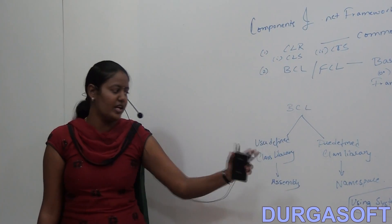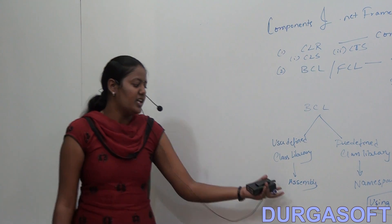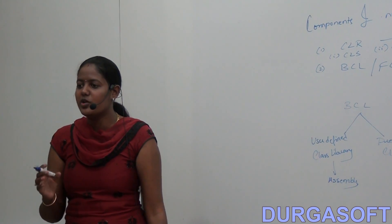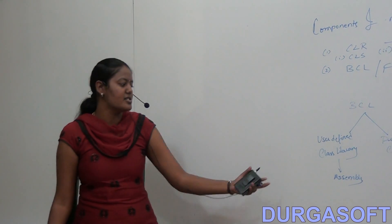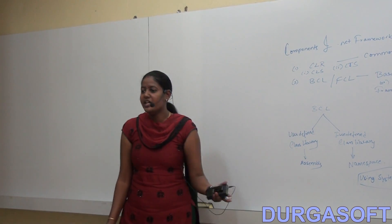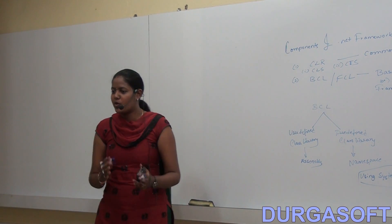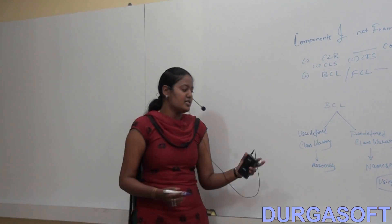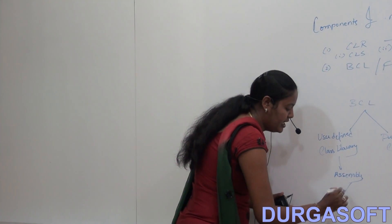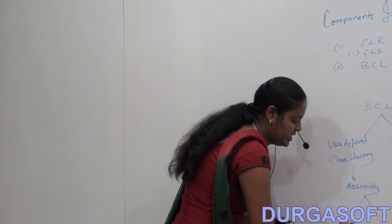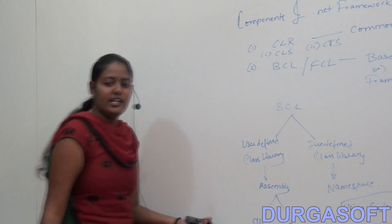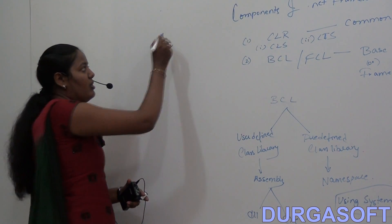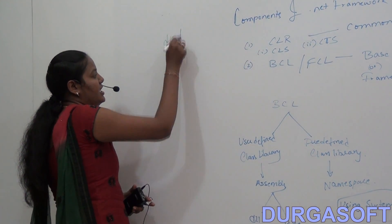For the user-defined class library, we have the assembly. An assembly is a small unit of deployment — a small part of deployment. The programmer creates the assembly by creating classes and methods. An assembly contains either a DLL or an EXE file. What is the difference between DLL and EXE?